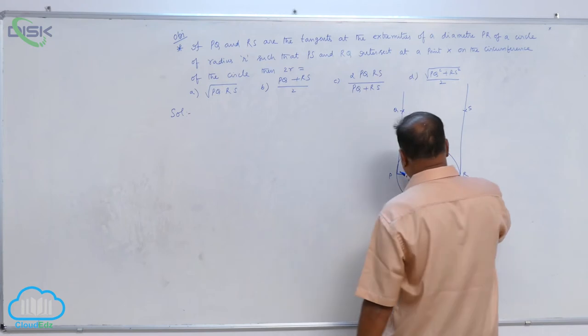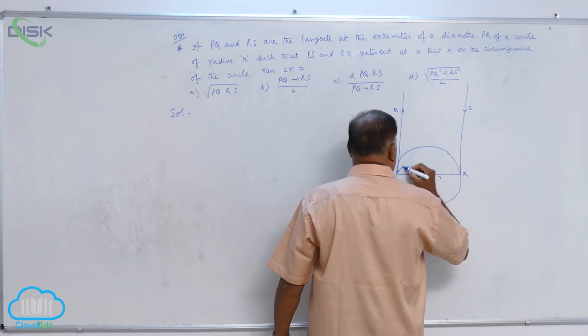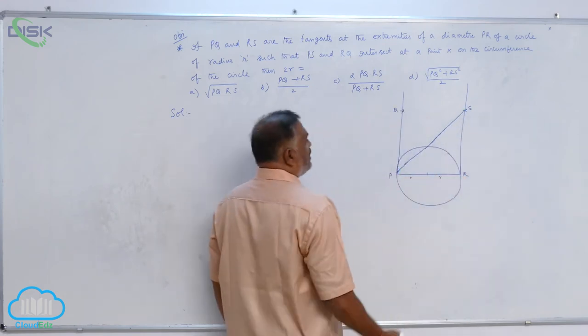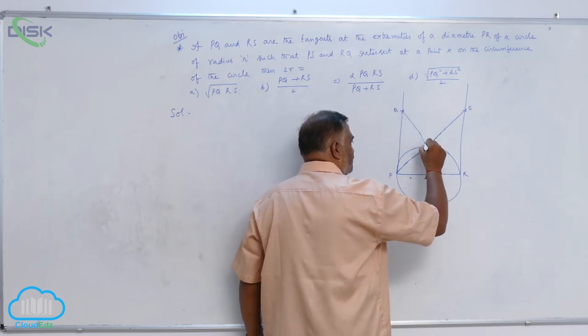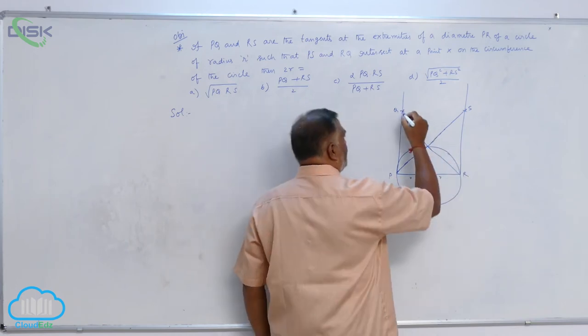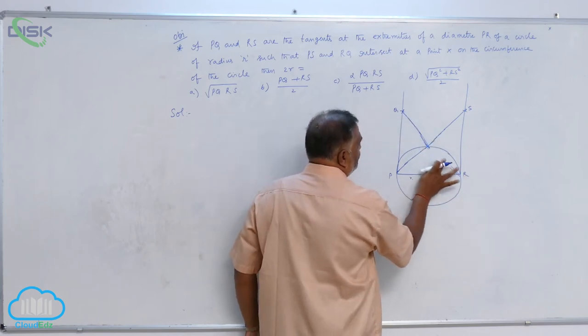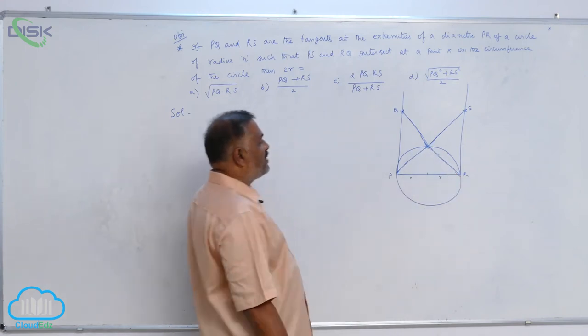Now, PS means you can join like this. This is PS and RQ means like this. Now, you observe very clearly.